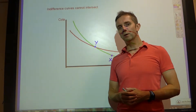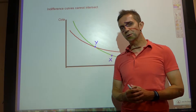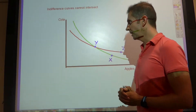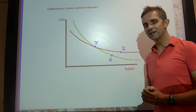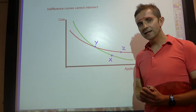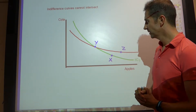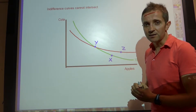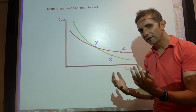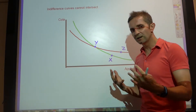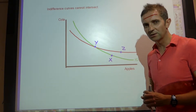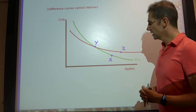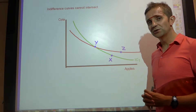Hi guys, Geekonomics here, just with a quick video with regard to indifference curves and the fact that indifference curves cannot intersect. Theory would suggest that they cannot intersect, otherwise the whole theory of budget lines and indifference curves would typically start to fall apart.